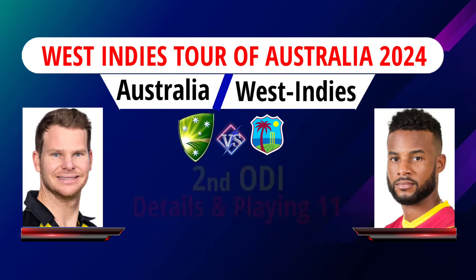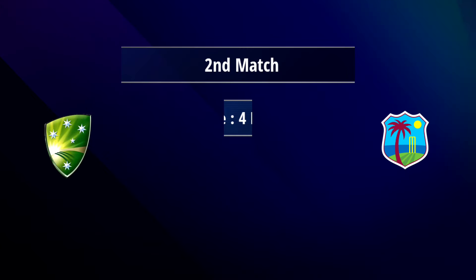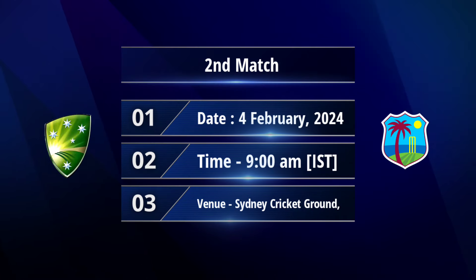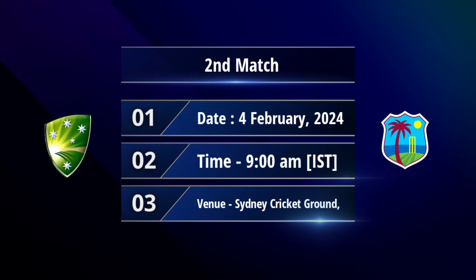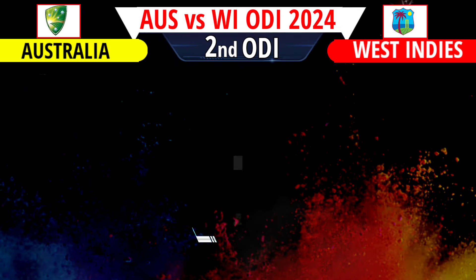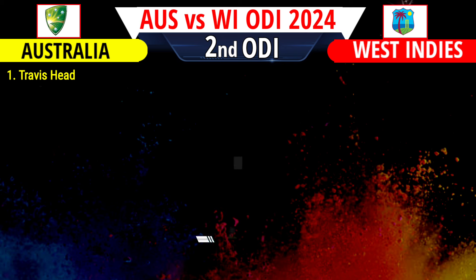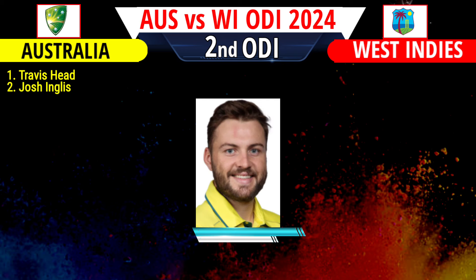Australia versus West Indies second ODI match 2024 details and both teams playing 11. Date: 4th February 2024, 9 a.m. Indian Standard Time. Venue: Sydney Cricket Ground, Sydney. Australia playing 11 — number one Travis Head, number two Josh Inglis.